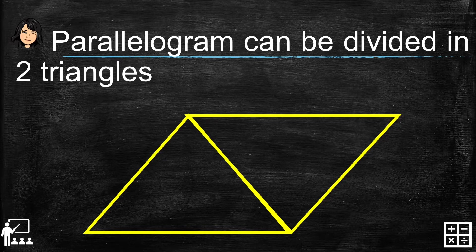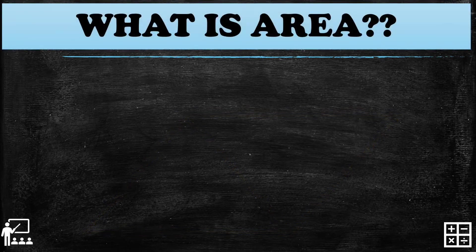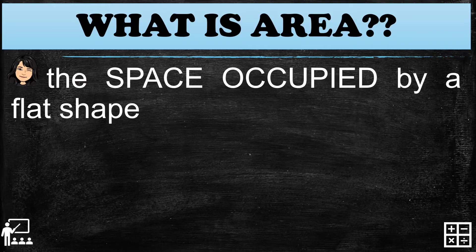If we divide the parallelogram by two, it forms two triangles. The reason I'm showing you this is because it will be useful to understand the formula for finding the area of a triangle. So let's start. What is area? Area is the space occupied by a flat shape.